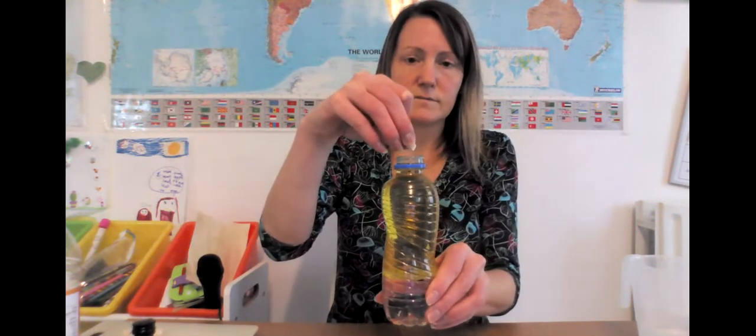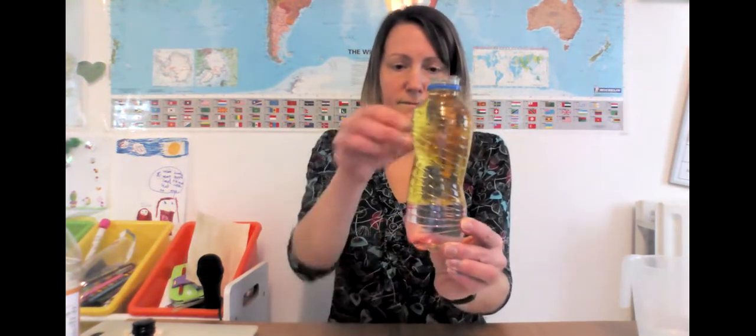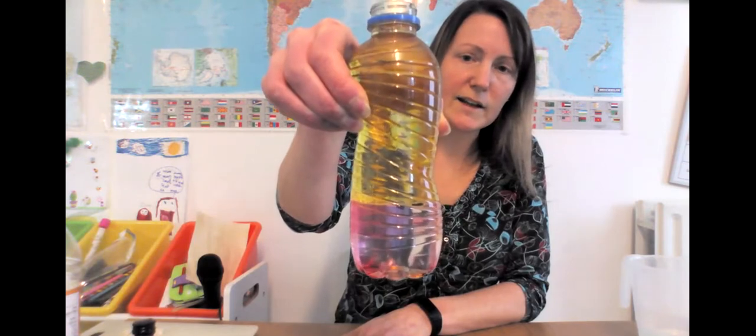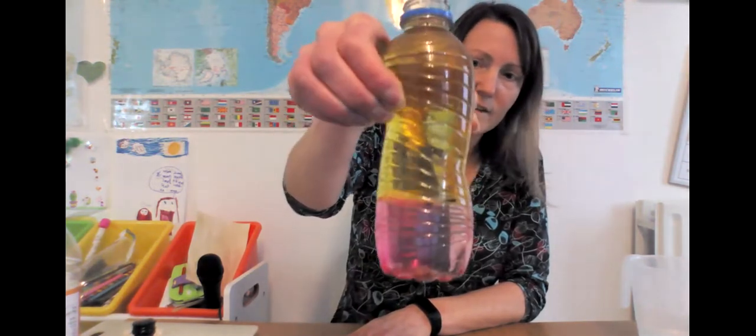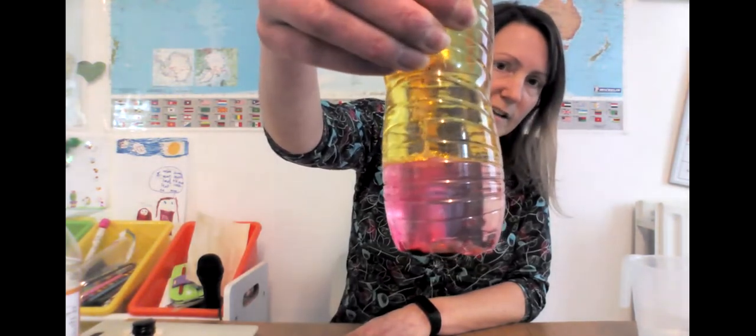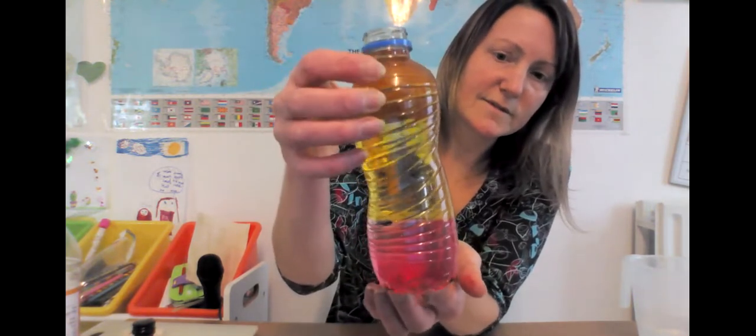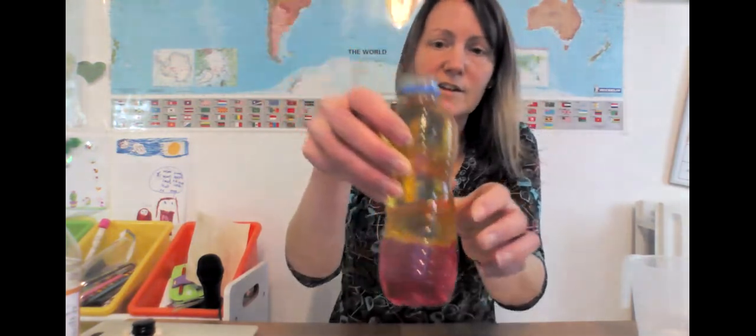So bring your bottle of liquid back in and then you just want to do one section of the fizzy tablet at a time. So let's see what happens. Hopefully, in your one, you'll be able to see a bit clearer what's happening. You can see the colored bubbles fizzing up and going all the way up through the oil to the top of the bottle. Just pause the video and have a good look and watch what's happening with your bottle.